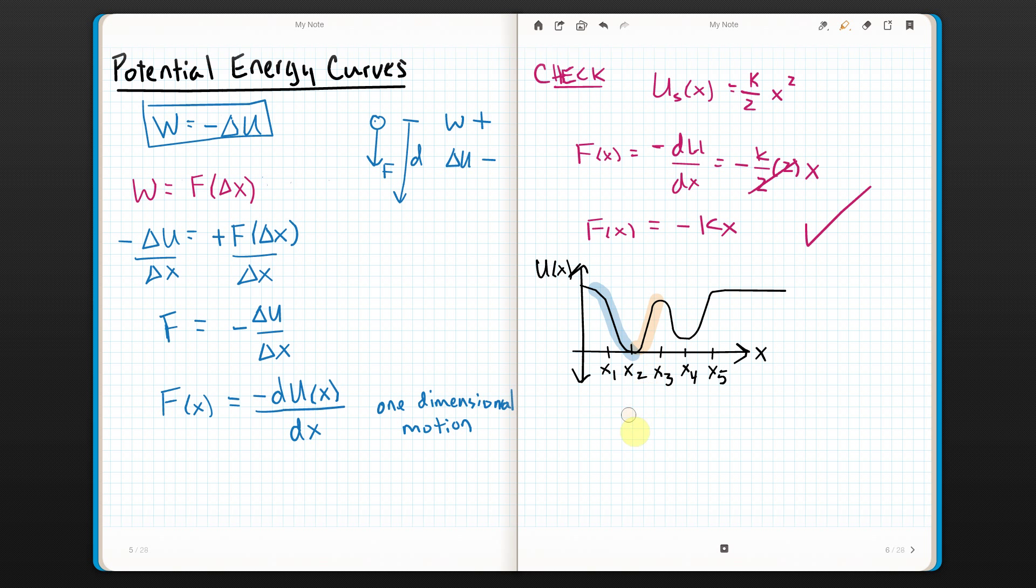The force is positive between x1 and x2, and between x3 and x4. So, the slope would be positive here, or sorry, the force would be positive here, and then the force would be negative here.